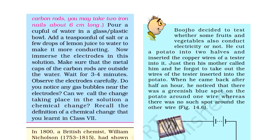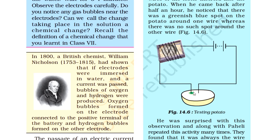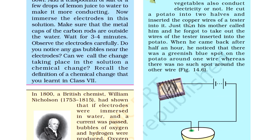Bhujo decided to test whether some fruits and vegetables also conduct electricity or not. Bhujo का scientist दिमाग और चल रहा था — Bhujo ने सोचा क्यों ना ये check किया जाए कि fruits और vegetables में भी electricity आती है या नहीं। He cut a potato into two halves and inserted the copper wires of a tester into it.